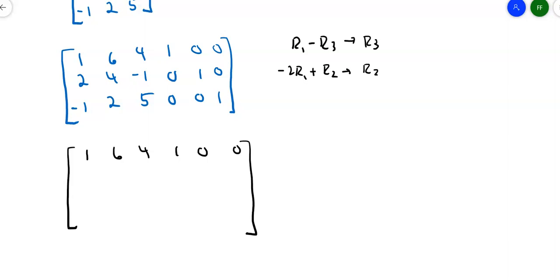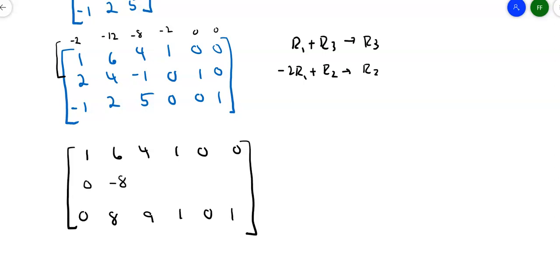The first thing is let's get rid of those two numbers in the first column — that 2 and that negative 1 at the bottom. How about row 1 plus row 3? That would be better: 1 plus negative 1 is 0, 6 plus 2 is 8, 4 plus 5 is 9, 1 plus 0 is 1, 0, 1. Next, take negative 2 times row 1 and add it to row 2. I get negative 2, negative 12, negative 8, negative 2, 0, 0 added to row 2. So negative 2 plus 2 is 0, negative 12 plus 4 is negative 8, negative 9, negative 2, 1, and 0.